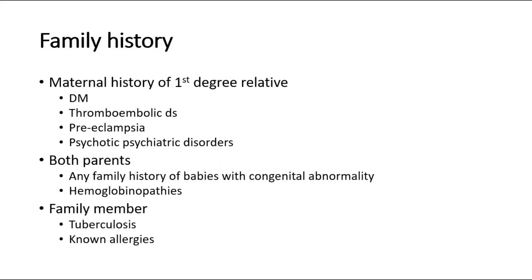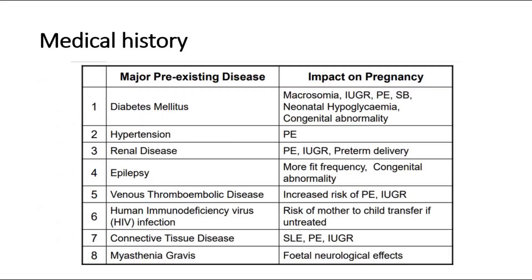For medical history, these are some of the major and important pre-existing diseases we should ask about, which might cause an impact on the current pregnancy: did she have any pre-existing diabetes mellitus, which could cause macrosomia baby or other complications? Did she have any chronic hypertension, renal disease, any neurological disorder like epilepsy, venous thromboembolic disease, or other significant diseases?